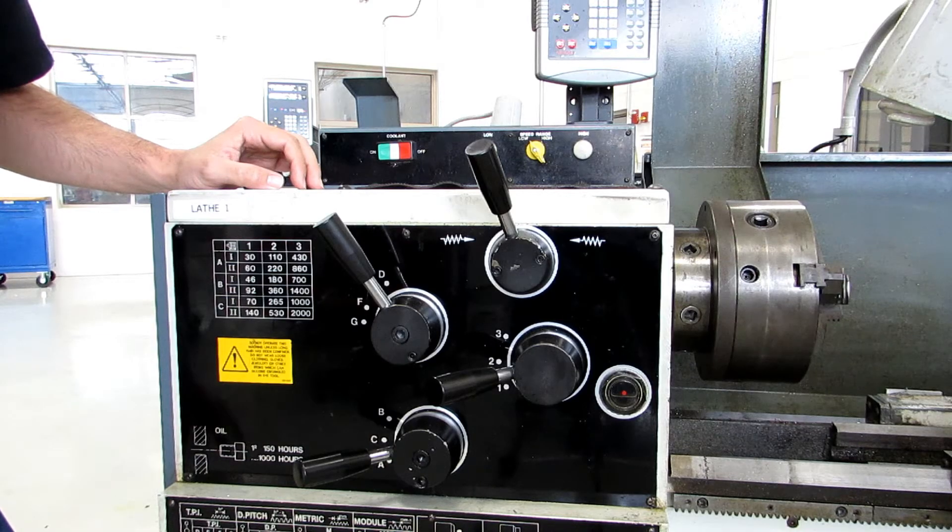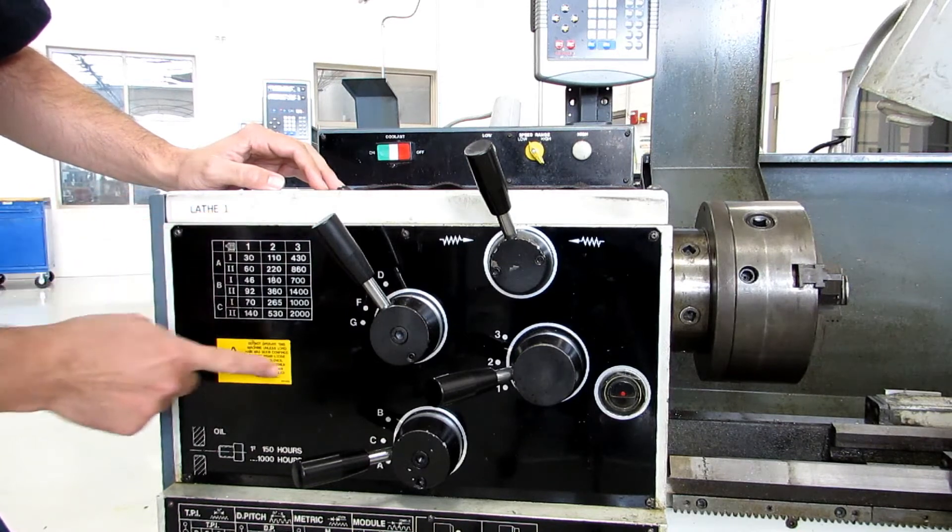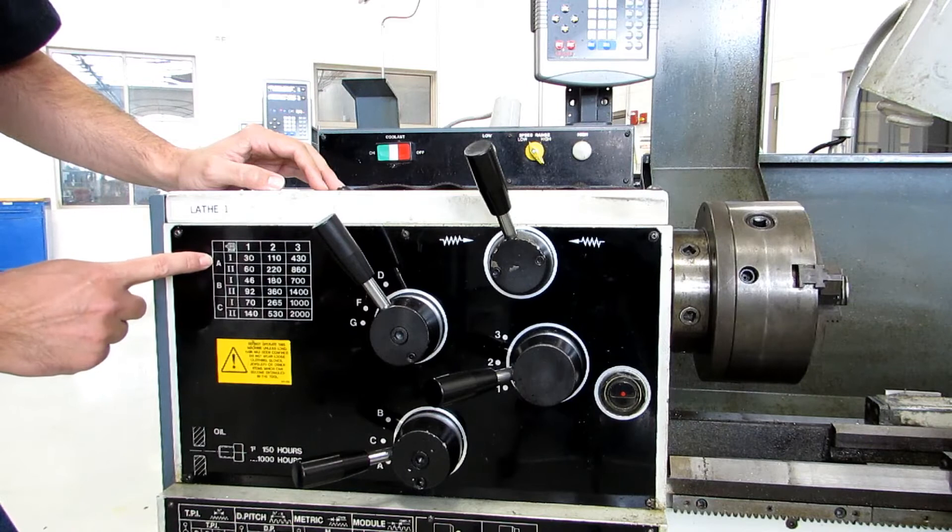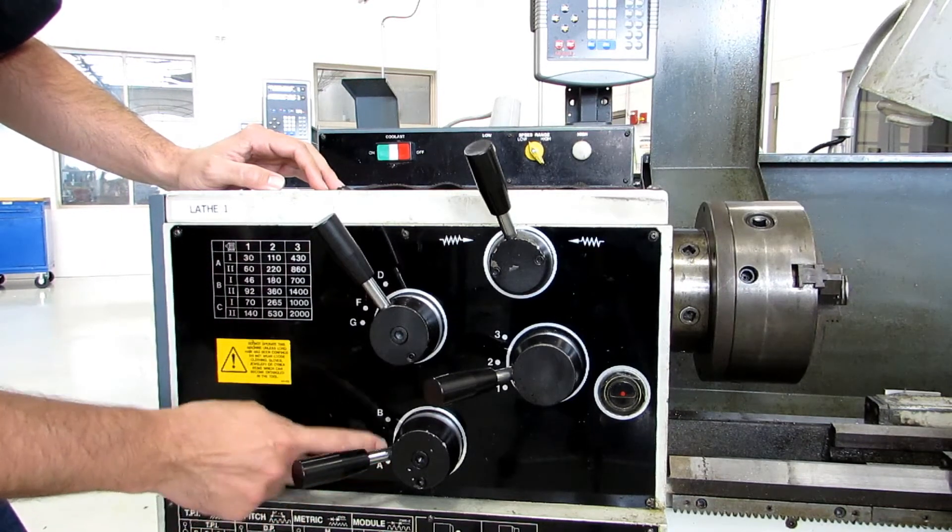The first thing we're going to be talking about in this video is how to change speeds on the machine, and you need to worry about this chart right here. This is our RPM chart, and you can see it says ABC down the side, which is this handle. You have A, B, and C.